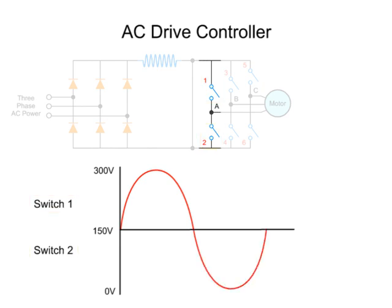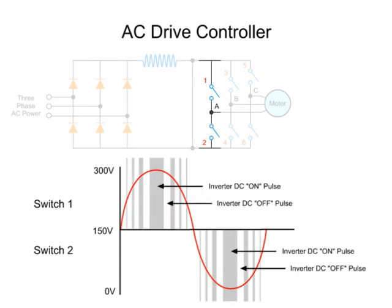The inverter output is not a true sine wave, but an approximation based on the application of pulse width modulation, or PWM. The longer a switch is on, the higher the AC output voltage. Conversely, the longer a switch is off, the lower the output voltage. This duration of on time for each pulse is called pulse width. The time duration and intervals of these DC voltage pulses determine the synthesized AC output voltage and frequency.